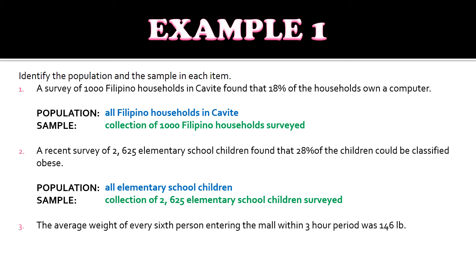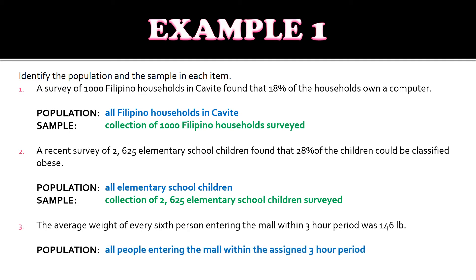Number three: the average weight of every 6th person entering the mall within a 3-hour period was 146 pounds. The population here is all people entering the mall within the assigned 3-hour period, and the sample is every 6th person entering the mall within the 3-hour period.